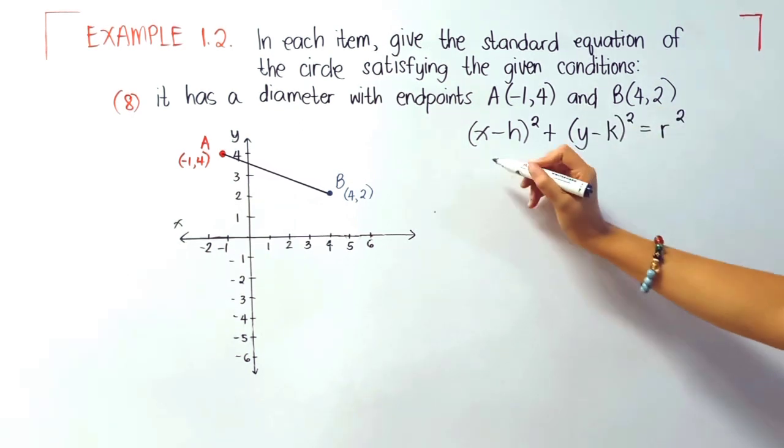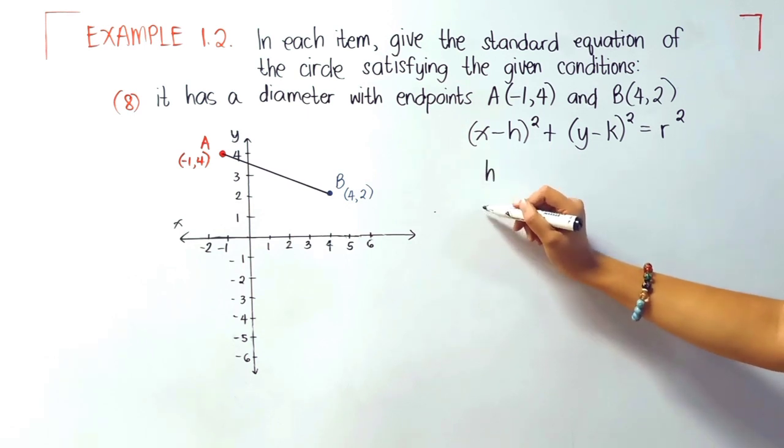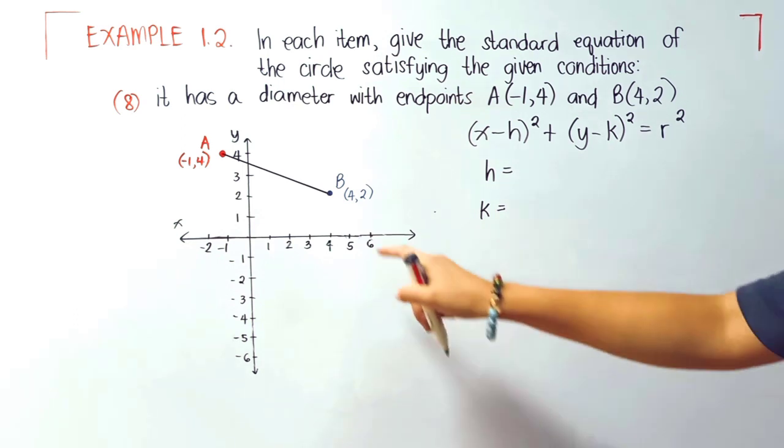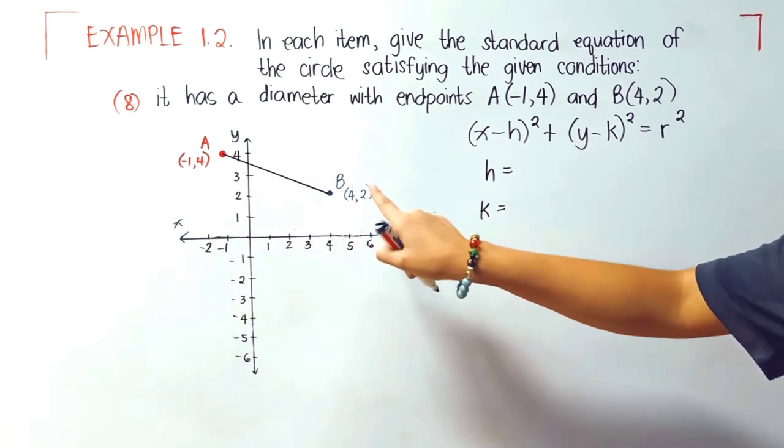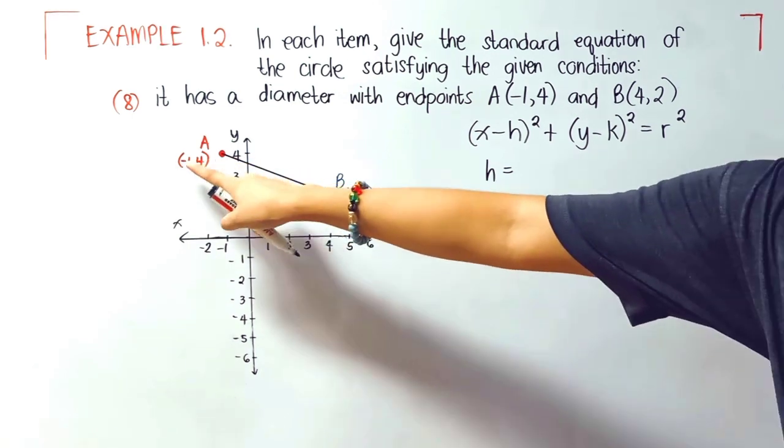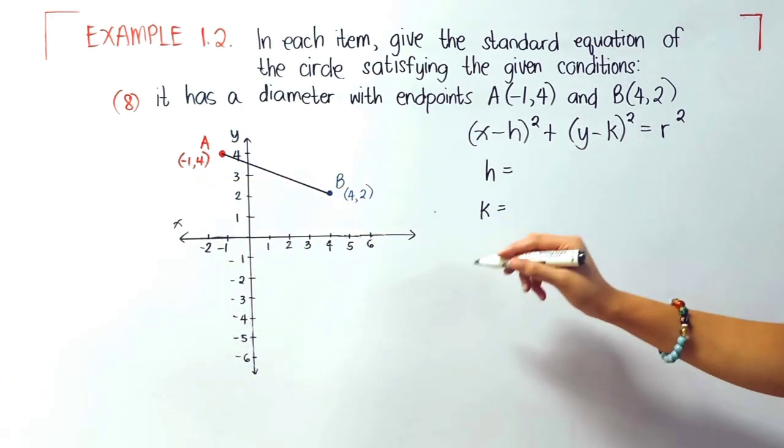The values of our h and k are unknown, but we can get these values if we consider the middle portion of our diameter. So let's start with the x: (-1 + 4) divided by 2.